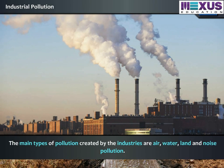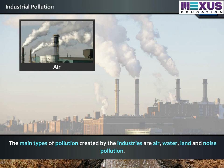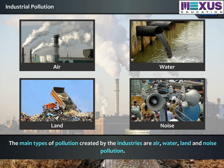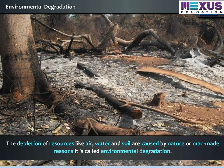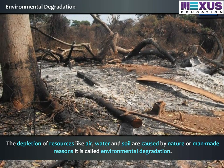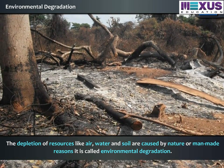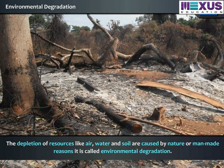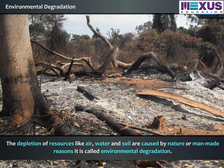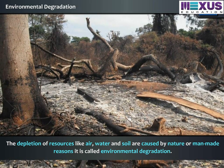The main types of pollution created by industries are air, water, land, and noise pollution. The depletion of resources like air, water, and soil caused by nature or man-made purposes is called environmental degradation.